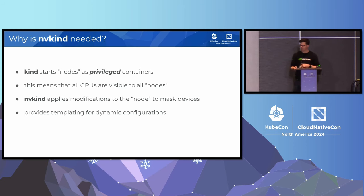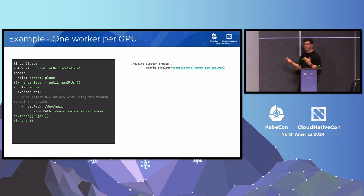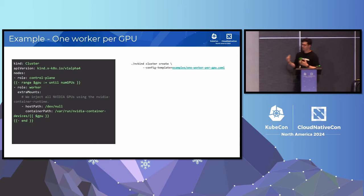The next step is to discuss some examples. Simple example: you've got an H100 box with eight GPUs and you want to simulate an eight-node cluster with one GPU per node. Basically, you have a configuration for a cluster and we allow some templating. We have a special variable called number of GPUs, and you can build a range expression over this number to construct a Kind cluster that has a number of worker nodes equal to the number of GPUs in the system. For each of the nodes, you add an extra mount, which is the mechanism used to tell the NVIDIA Container Toolkit to inject that particular device based on the ID into that node. EnvyKind does its magic, and only that GPU is available in that particular node.